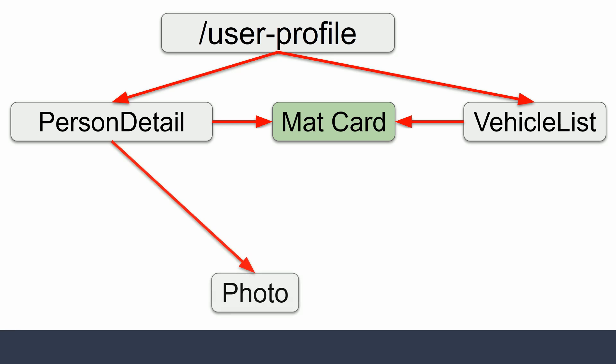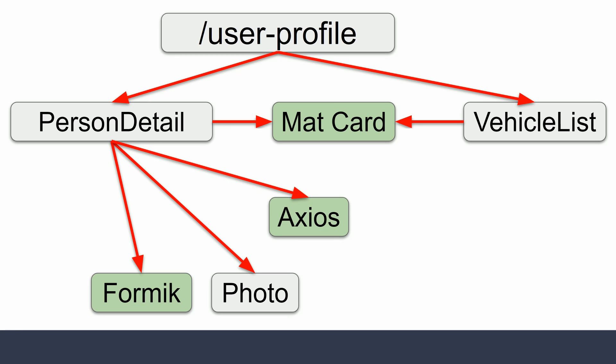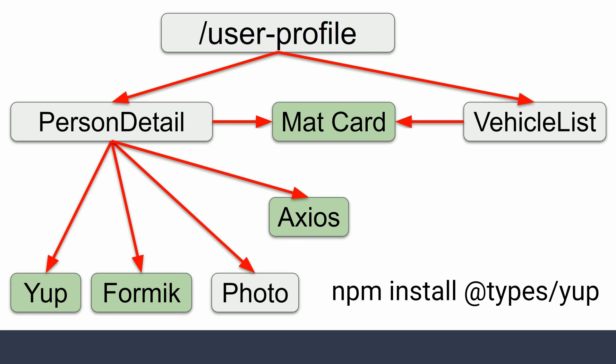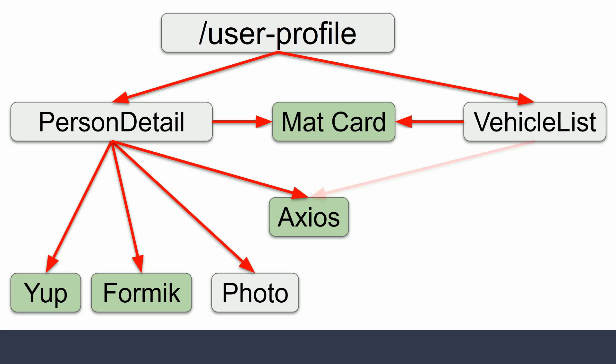Material UI already provides type definitions — the .d.ts files are already inside Material UI when you npm install it — so we mark it green. The photo component is from our own application, so it's not green yet. Formik already ships with .d.ts files, so we're good there. Axios also ships with .d.ts files. Yup doesn't have definition files, but there are types available on npm, so we can just npm install @types/yup and that becomes green immediately.